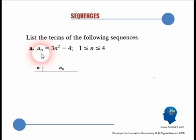What is given? You're given the nth term, a sub n is equal to 3n squared minus 4. And you're told that n lies between less than or equal to 4 and greater than or equal to 1. And you're asked to find or list the terms of the following sequences.